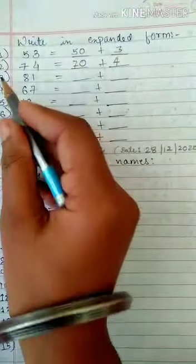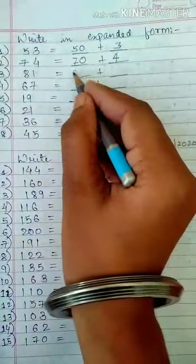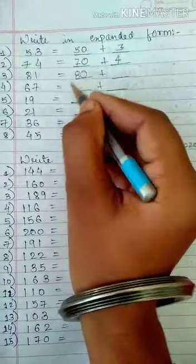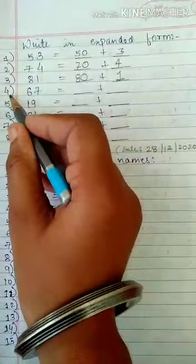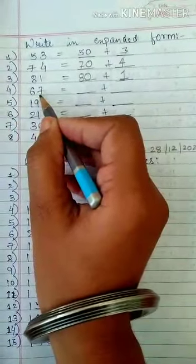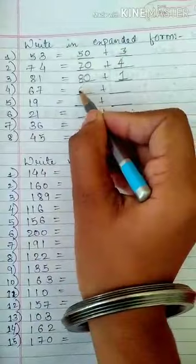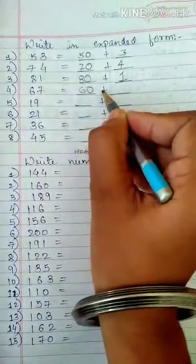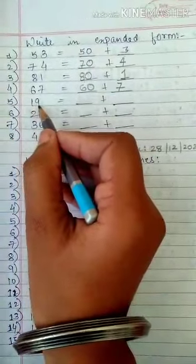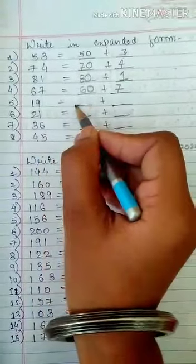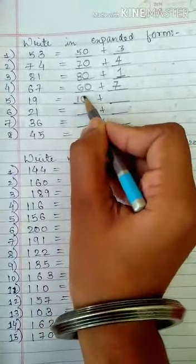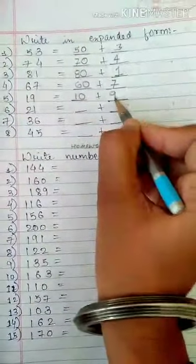Okay? Question number 3, 81 is equal to 80 plus 1. Question number 4, 67 is equal to 60 plus 7. Question number 5, 19 is equal to, what will be the answer? 10 plus 9.